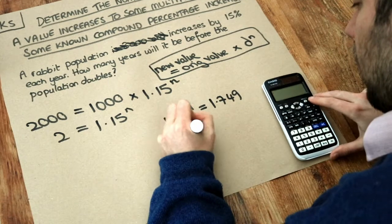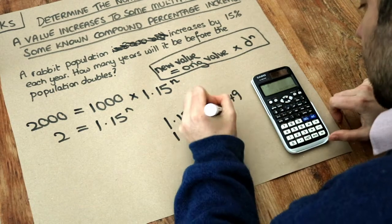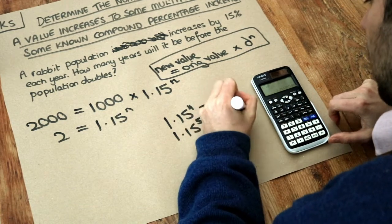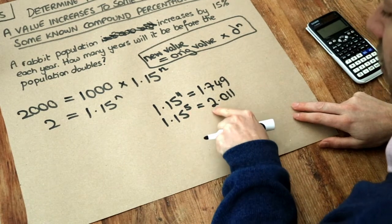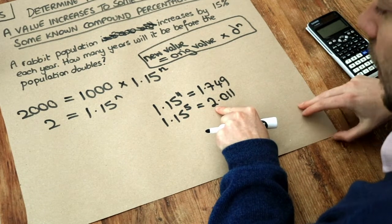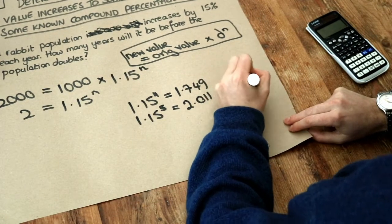What about 1.15 to the power of 5? You get 2.011. And we can see that after 5 years the population would have reached over double. And therefore the answer is 5 years. So n was 5.